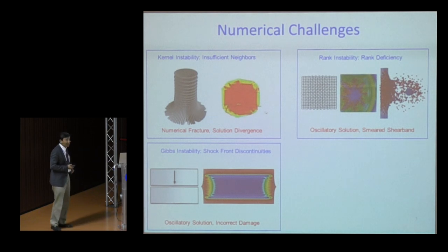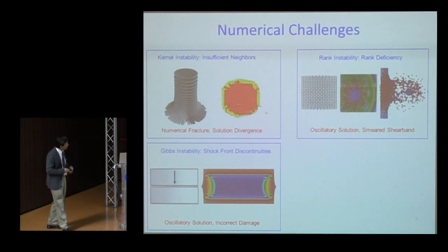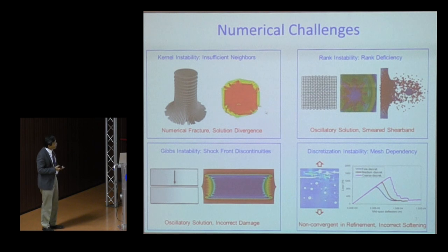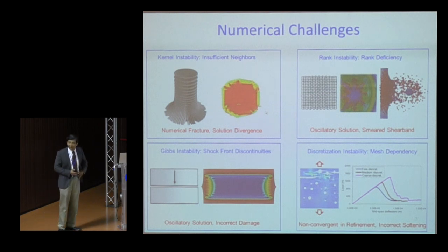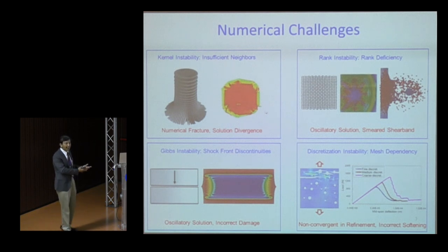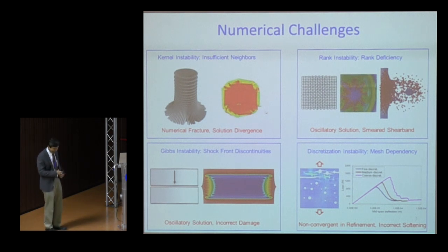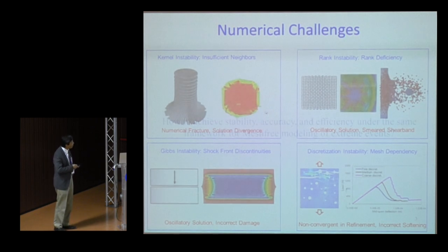The third instability is the Gibbs instability. When a shock forms, the shock front discontinuity leads to the Gibbs phenomenon, which we need to address. The fourth issue is that when softening and strain localization occur, the problem needs to be regularized — how do we introduce regularization when materials are damaged?